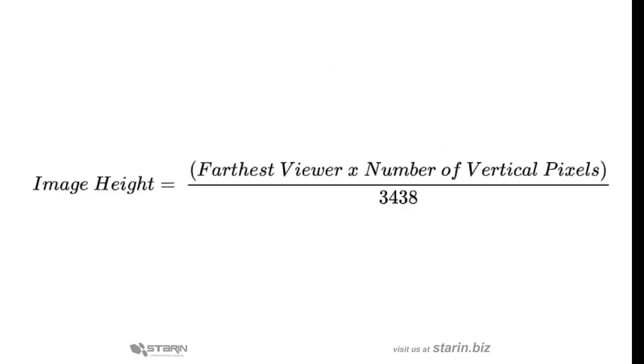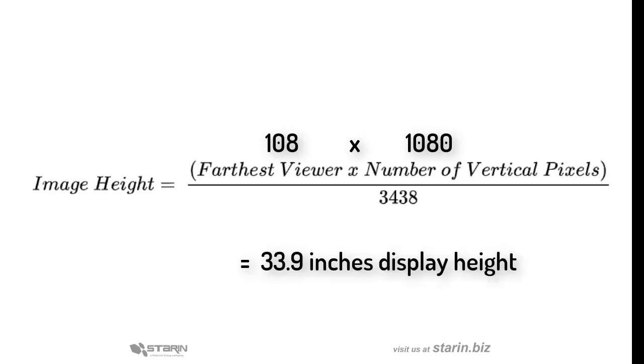Now here's the formula. To save you the math, the acuity factor for analytical viewing is 3438. So if we multiply 108 inches by 1080 vertical pixels and then divide that by 3438, we get 33.9 inches for the required display height. Now a 16:9 display with a 34 inch height gives us about a 70 inch diagonal display.